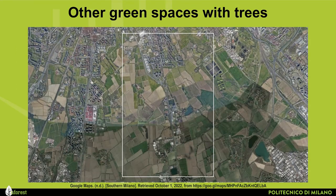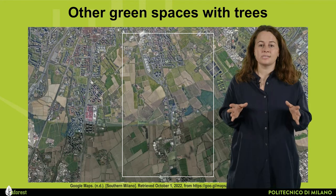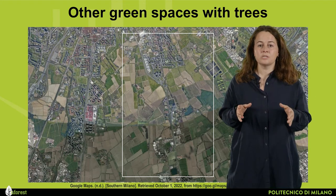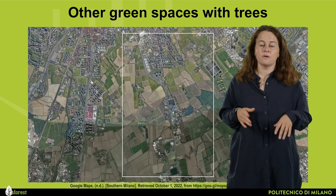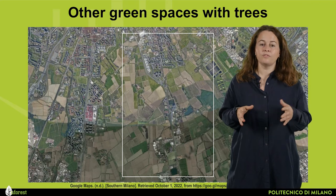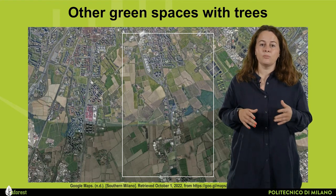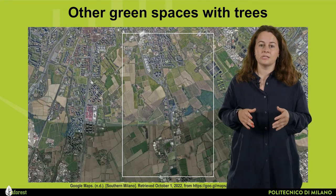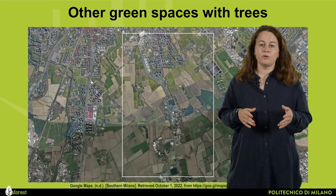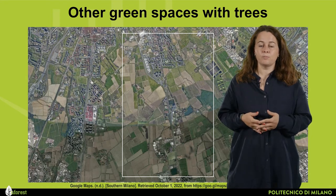The last category includes other green spaces with trees, for example urban agricultural plots, sport grounds, vacant lands, lawns, river banks, open fields, cemeteries and botanical gardens, such as the peri-urban environment you can see here in the southern part of Milan.